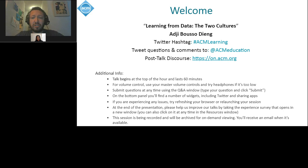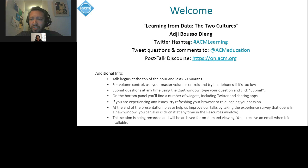Today's presentation is 'Learning from Data: The Two Cultures' by Aji Boussoudiang. Aji Boussoudiang is a Senegalese computer scientist and statistician working in the field of artificial intelligence. She received her PhD in statistics from Columbia University, where she was advised by David Bly and John Paisley. Her doctoral work at the intersection of probabilistic graphical modeling and deep learning received many recognitions, including a Google PhD fellowship in machine learning. Aji is also the founder of the Africa I Know, a research scientist at Google AI, and an incoming tenure-track assistant professor of computer science at Princeton University.